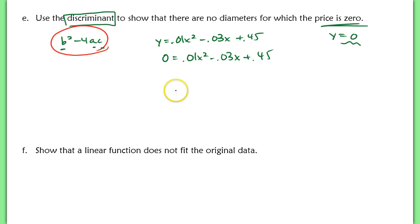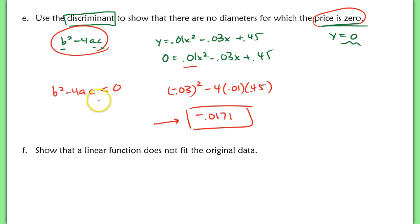I'm just going to plug this right into the discriminant. So b squared is going to be negative 0.03 squared. That should result in a positive, minus 4 times my a value, 0.01, multiplied by 0.45. After plugging this into my calculator, I get negative 0.0171. So because this is a negative value, meaning b squared minus 4ac is negative, it's less than 0. This would show that there are no, there's no actual diameter for which the price is 0 because this is, inside my discriminant, a negative value. This would produce no real solution.